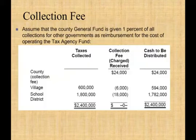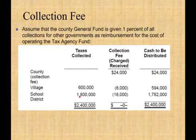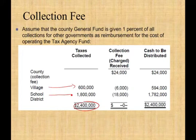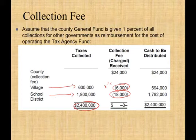The county general fund receives 1% of all collections for other governments as reimbursement for their costs. Of the $2.4 million collected, $600,000 was for the village and $1.8 million was for the school district. At 1%, we expect $6,000 from the village and $18,000 from the school district — a total of $24,000 — as reimbursement for our collection effort.